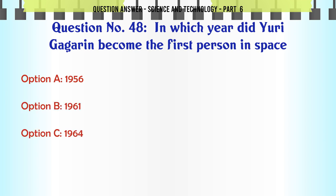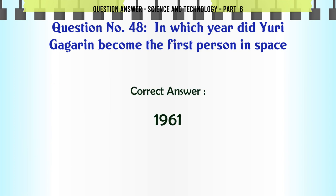In which year did Yuri Gagarin become the first person in space? A. 1956. B. 1961. C. 1964. D. 1965. The correct answer is 1961.